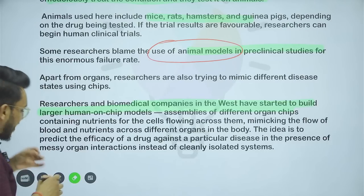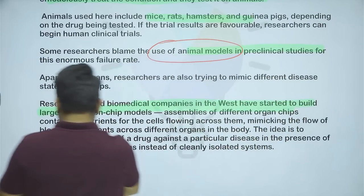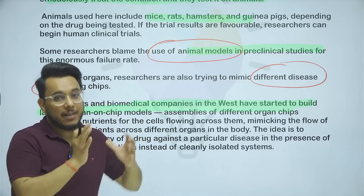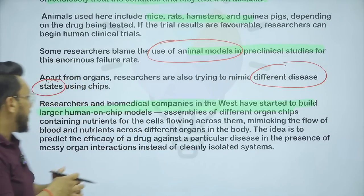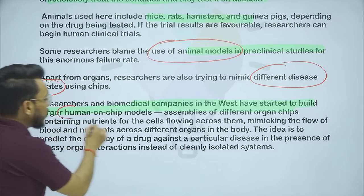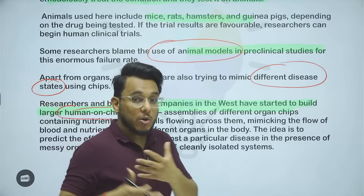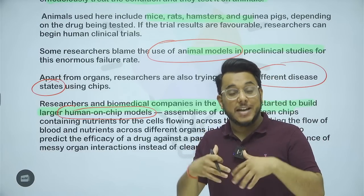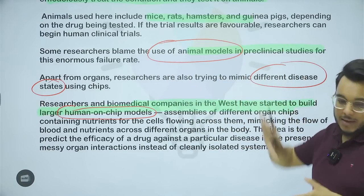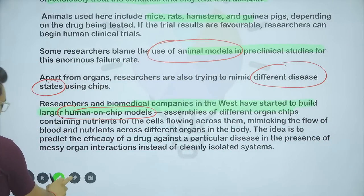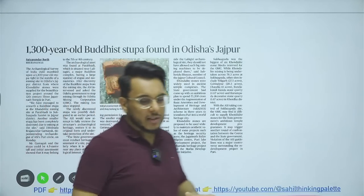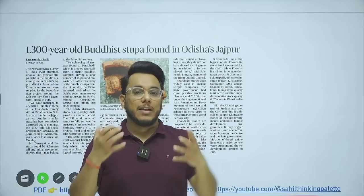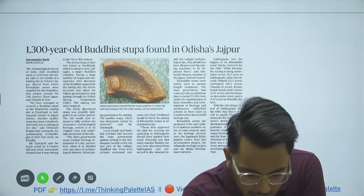Biomedical companies in the West are building human-on-chip models to mimic different body organs. In India too, we are focusing on developing these models so that drug research can be more effective, faster, and more efficient. When UPSC asks questions on this, they ask broad questions — not details on the working of the machine. The key takeaway is what organ chips are and their implication: replacing animal testing to make drug discovery more ethical, reliable, and cost-effective.